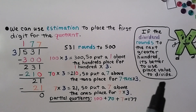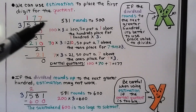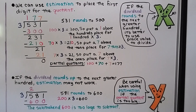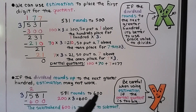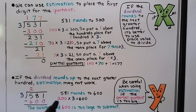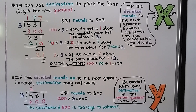But if the dividend rounds to the next greater 100, it's better to use place value to divide. When we did 531, it rounded down to 500 — that worked. But if the dividend rounds up, estimation may not work. Here we have 581 divided by 3. This 581 rounds to 600. When we ask how many times 3 can fit into 600, we think 200 times 3 is 600, so we estimate a 2 and write it up here. But then 200 times 3 gives 600, and this subtrahend 600 is too large to subtract from the dividend. So be careful when using estimation — if the partial quotient is too big, my personal choice is to always use place value to divide.